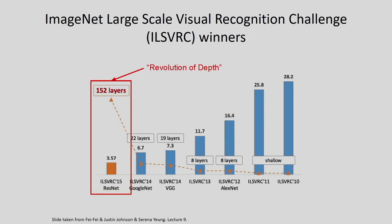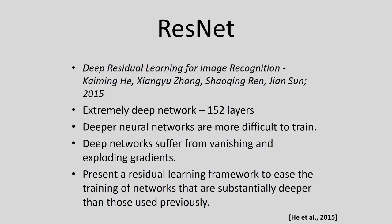Finally, the residual network has 152 layers, making it a very deep architecture, and was the winner of ILSVRC 2015 with a 3.57% error rate. It was developed in 2015. Because it is extremely deep, it is very difficult to train — the problems of vanishing gradient and exploding gradient arise. This is why the concept of the residual learning framework was developed.